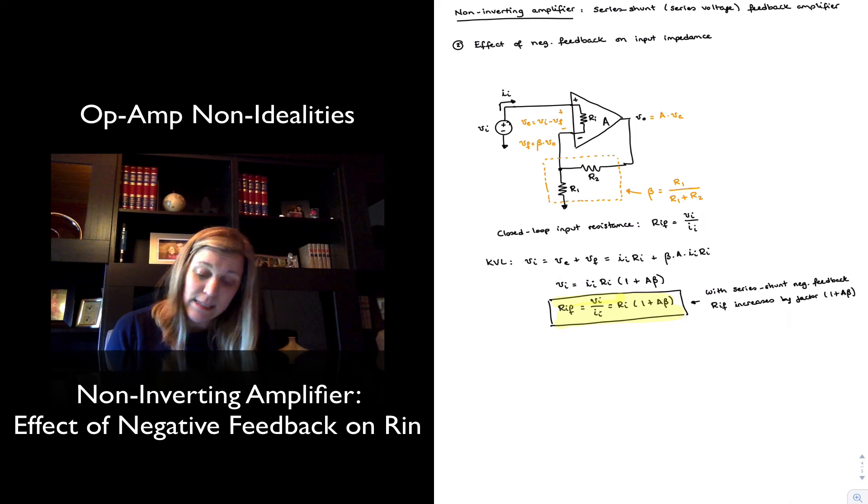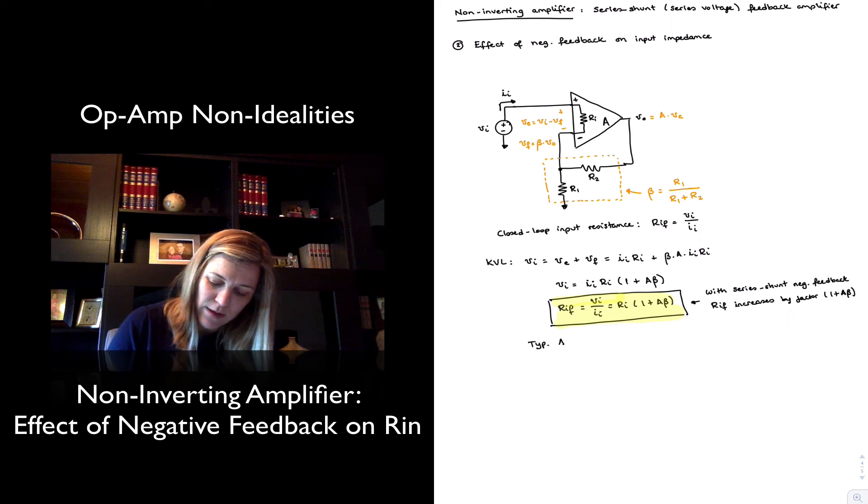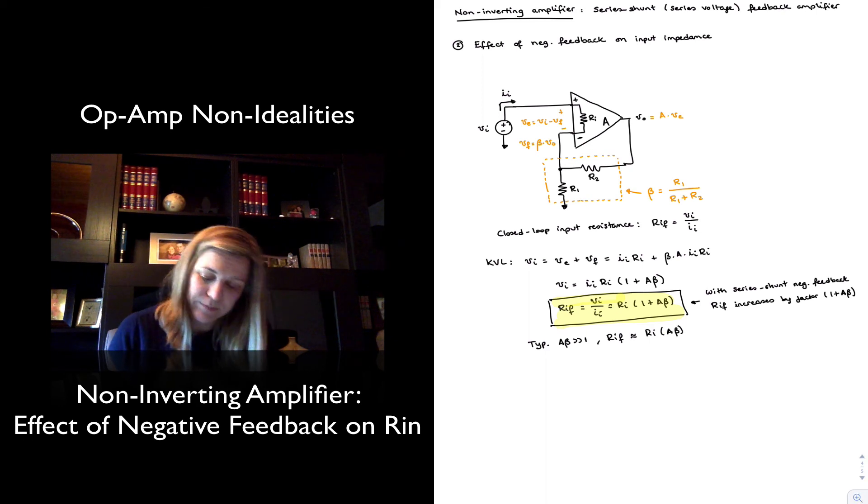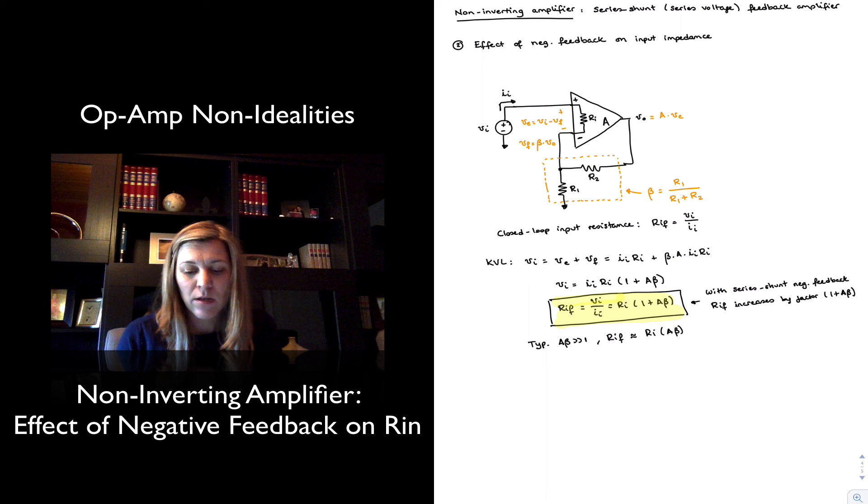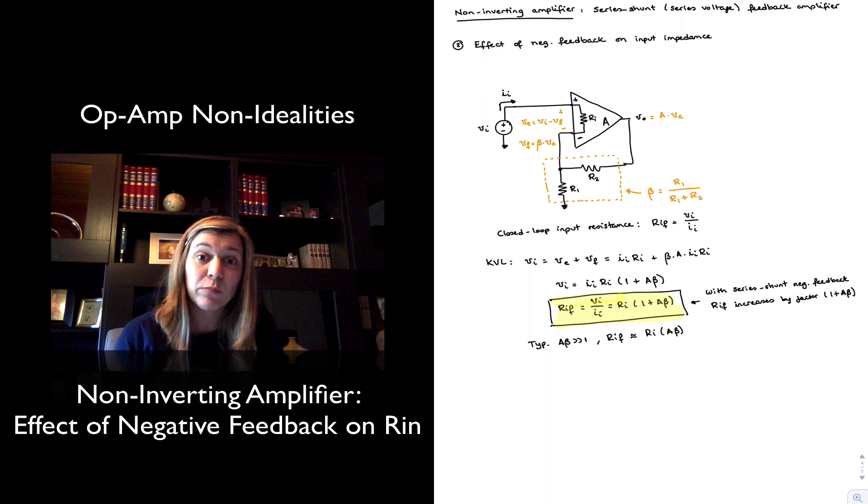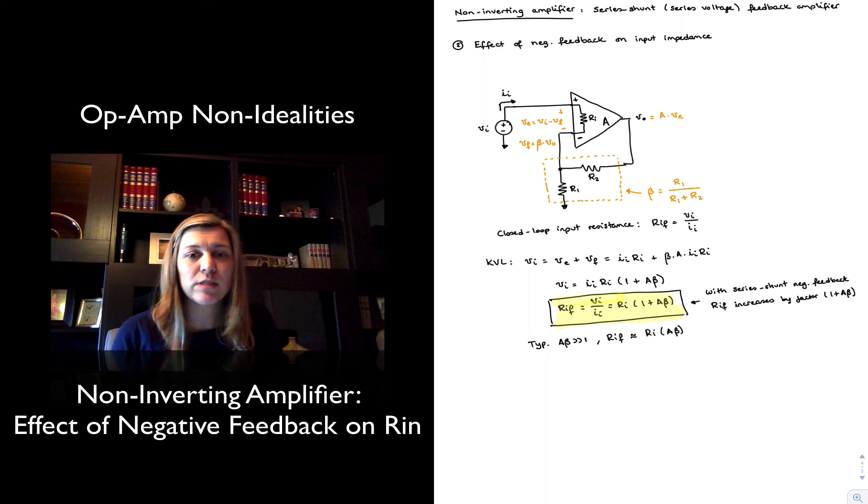And in all reality, since typically a times beta will be much larger than 1, we can approximate rif to be approximately ri times the loop gain, a times beta. So that's an approximation we can make. And in any case, this is a good result for this particular case, for a voltage amplifier. It's a desirable result because it means negative feedback not only has stabilized our gain, but it has also increased our input resistance. And it just so happens in a voltage amplifier we would like to have an input resistance that is as large as possible. So negative feedback is helping us in that regard.